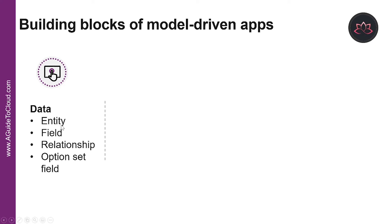Entities are items with properties that you can track. Fields are properties that are associated with an entity and help define that entity. A field is defined by a data type, which determines the type of data that can be entered or selected.